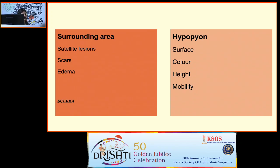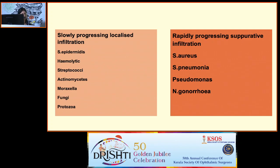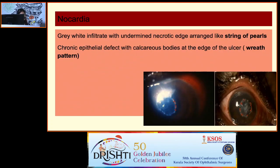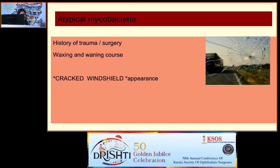Don't forget to examine the sclera — it is very important. Diagnostic clues: slowly progressing localized inflammation suggests Streptococcus epidermidis, hemolytic Streptococcus, or actinomyces. Rapidly progressing ulcers suggest Staphylococcus aureus, Pseudomonas, or Neisseria. Gram-positive cocci usually show a discrete infiltrate with distinct margins and minimal surrounding corneal edema. Gram-negative bacilli show high tissue destruction, ill-defined borders, and severe surrounding reaction. Some organisms have specific patterns — Nocardia has a wreath pattern; actinomyces has a cracked windshield appearance.